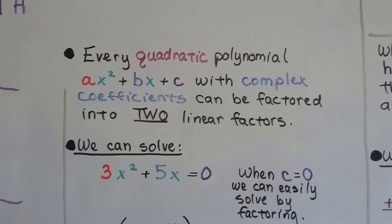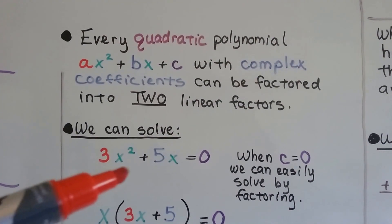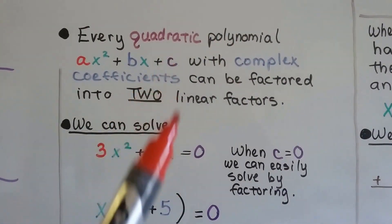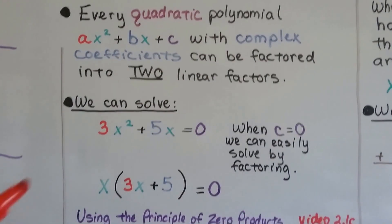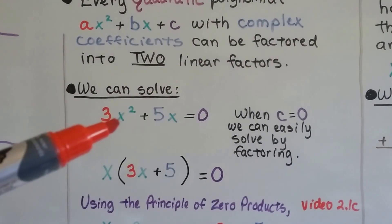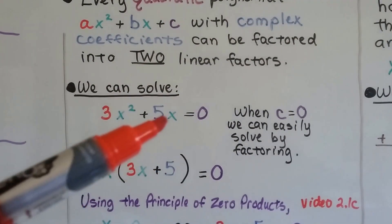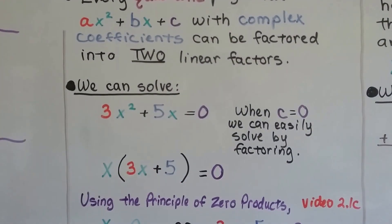So if we have 3x squared plus 5x equals zero, see our c value is equal to zero, we can easily solve this by factoring. To factor this, we can break that x into an x and an x, can't we? And if we put the x on the outside of the parentheses, we don't need that one there, do we? So we just have x times 3x plus 5 equals zero.